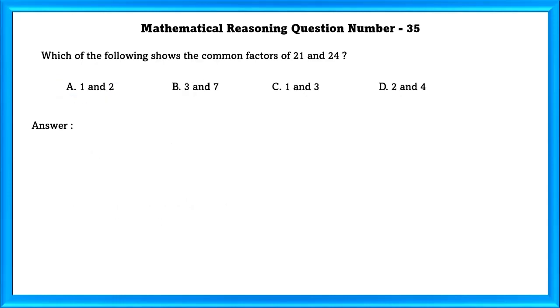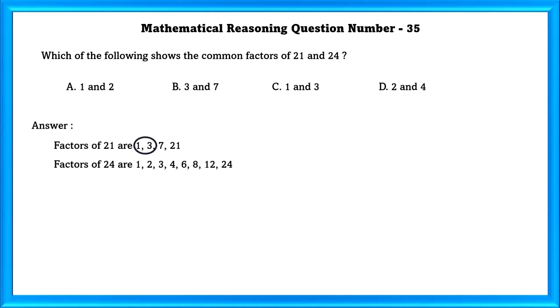Mathematical reasoning question number 35: Which of the following shows the common factors of 21 and 24? The common factors of 21 and 24 are 1 and 3.